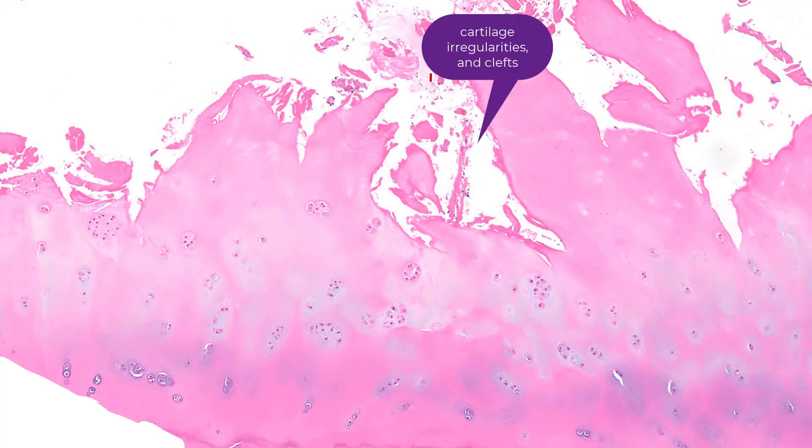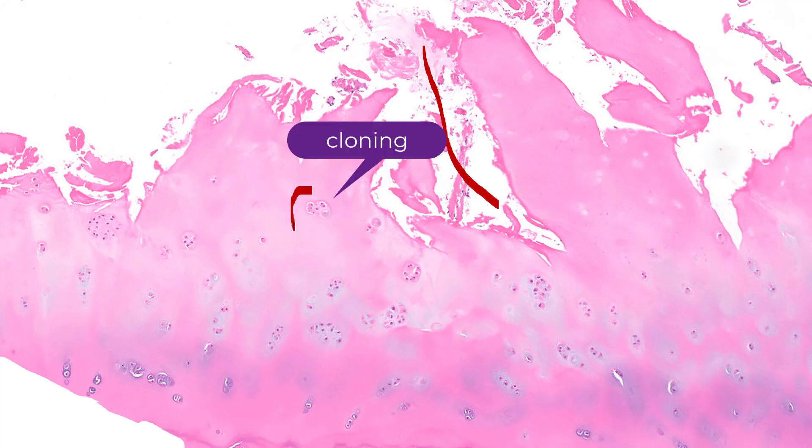You'll see two things with osteoarthritis. One, within the articular cartilage, you'll see deep clefts and irregularities of the cartilage — occasionally the cartilage may be entirely intact. And two, you see cloning. This is cloning: multiple chondrocyte nuclei in a single lacuna space.